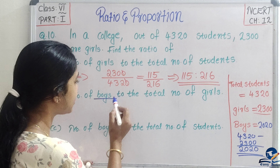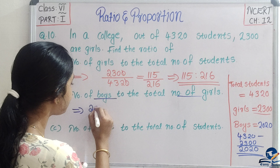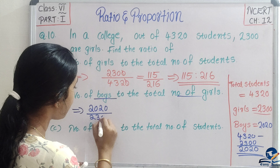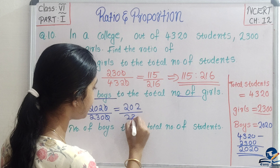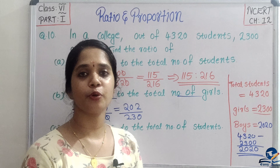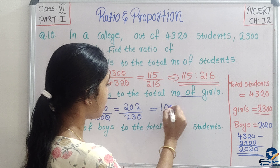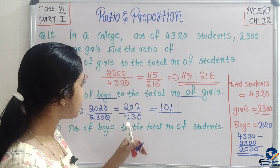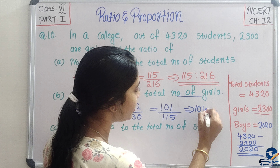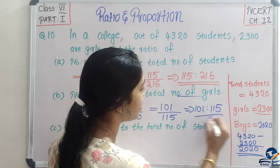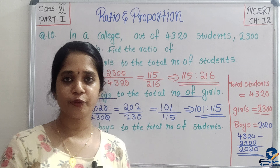Now find the ratio of boys to girls. Boys = 2,020 and girls = 2,300. Cancel a zero: 202 divided by 230. Divide by 2: 101 divided by 115. The ratio of boys to girls is 101 is to 115.